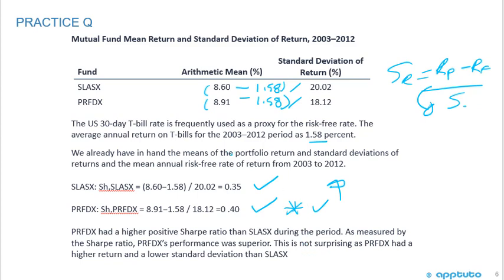That result is not surprising because PRFDX actually had a higher return and lower standard deviation. In our return-to-risk framework, getting a higher return at a lower standard deviation is clearly better performance.